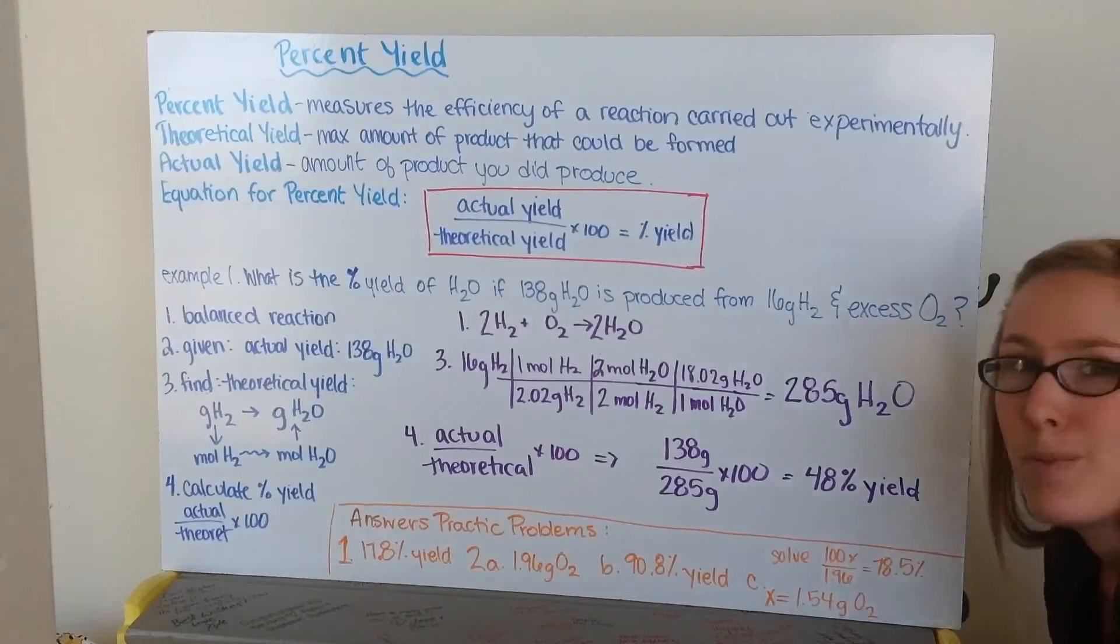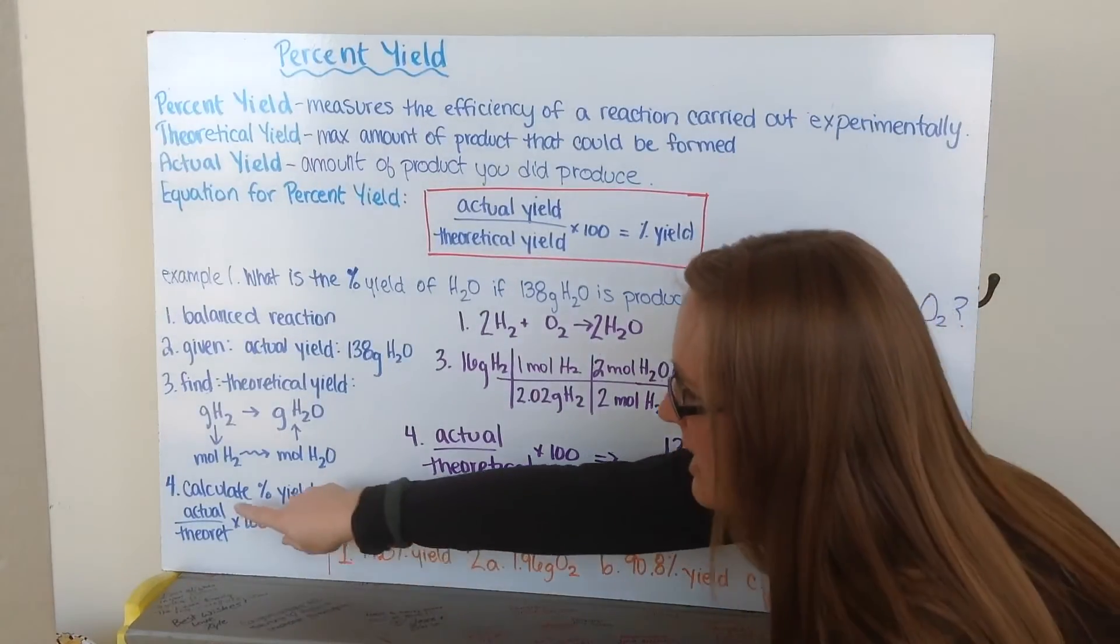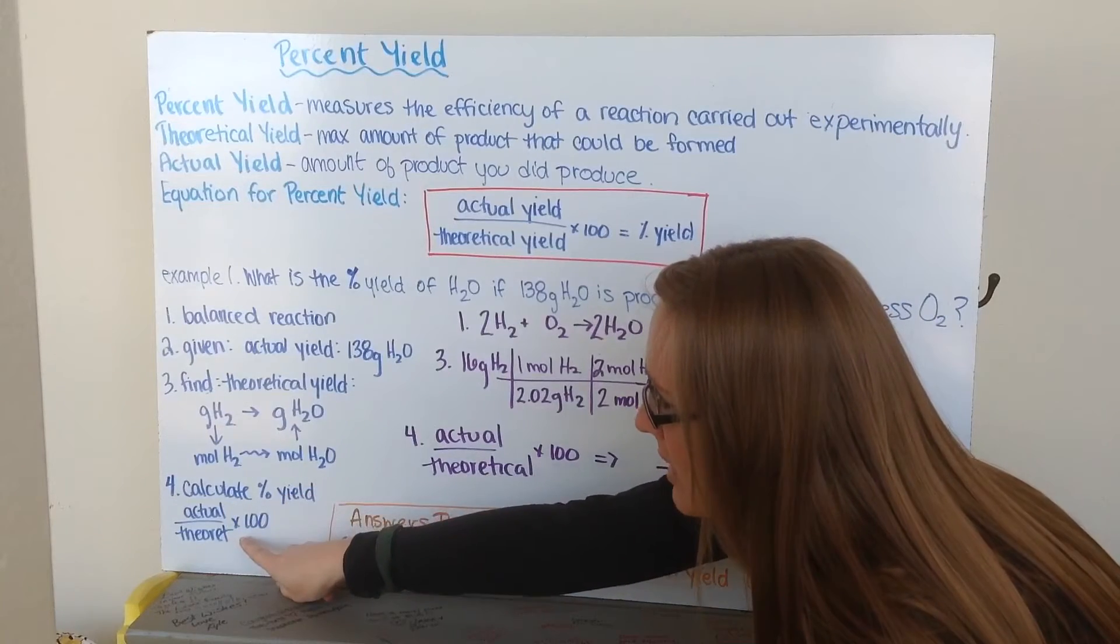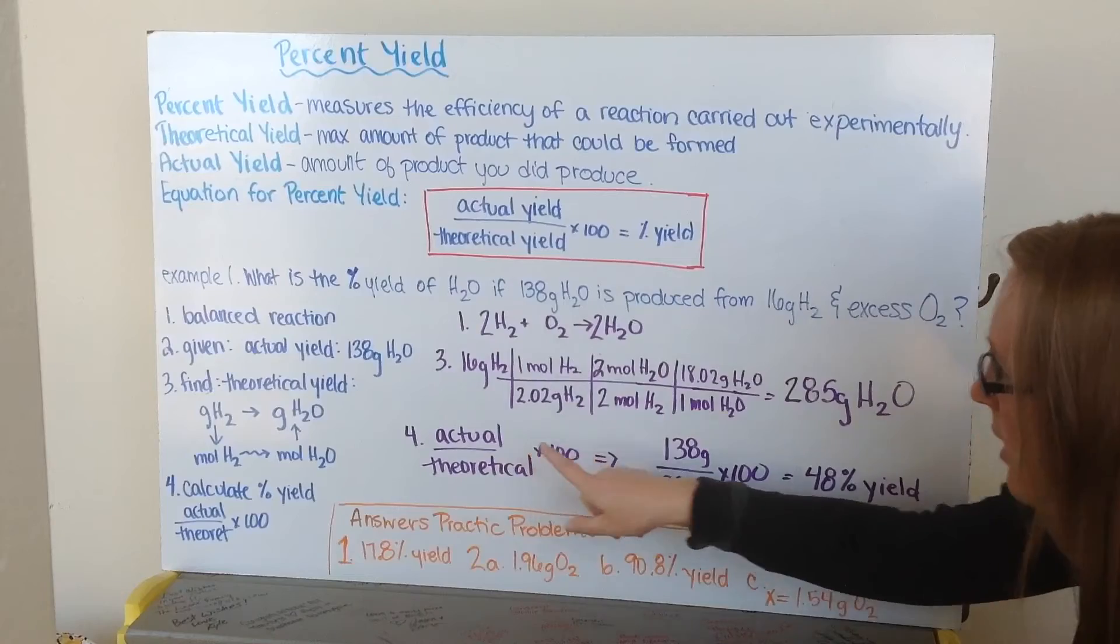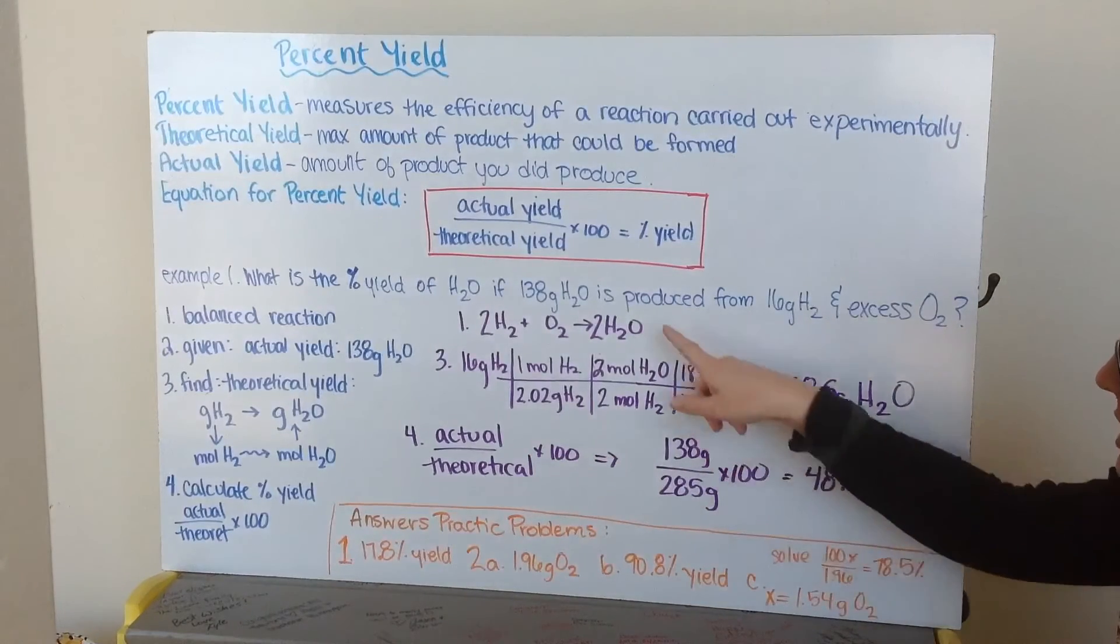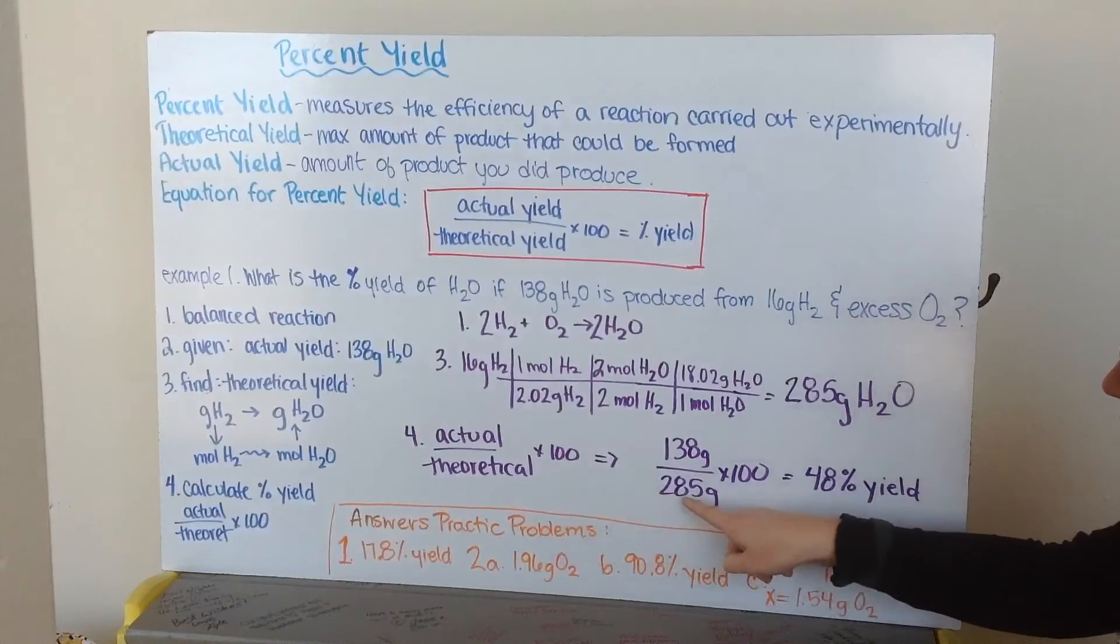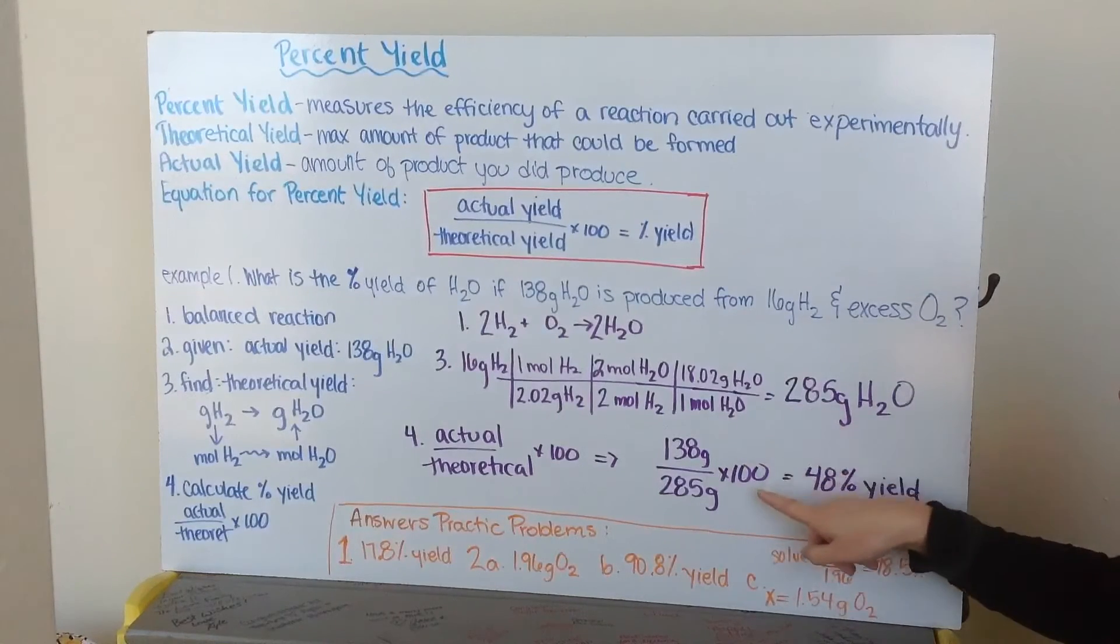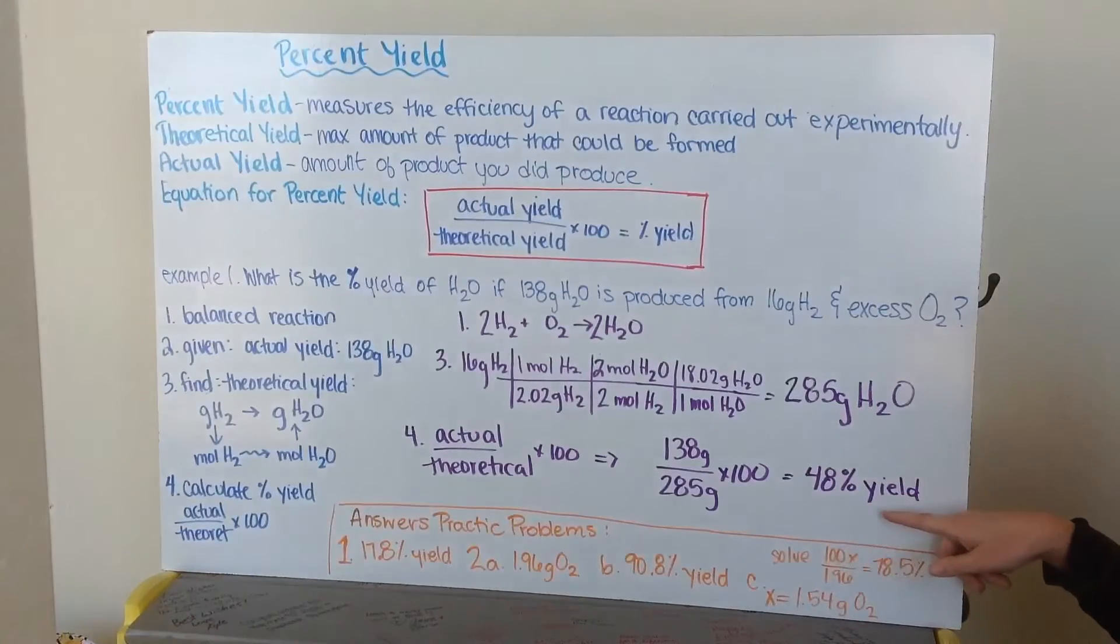Well, that's great, but that's not how much I actually made. So I need to determine my percent yield. Where I take my actual value divided by my theoretical value times 100. My actual value of 138 grams is what I really produced. Divided by my theoretical value of 285 grams is what I should have produced times 100. Gives me a percent yield of 48% of water was actually produced out of what should have been produced.